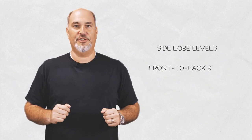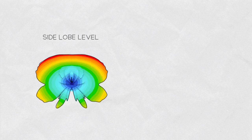Side lobes are often judged by so-called side lobe levels or front-to-back ratio. Side lobe level is the difference between the gain of the main lobe and the gain of the strongest side lobe.